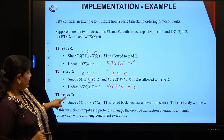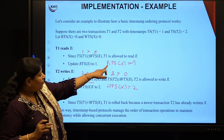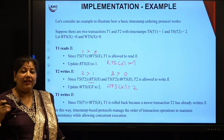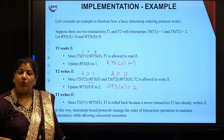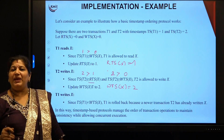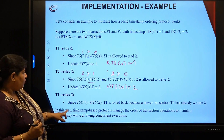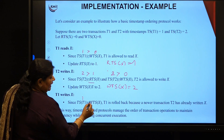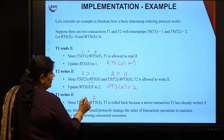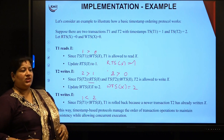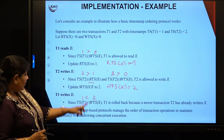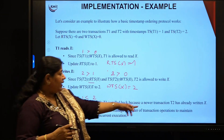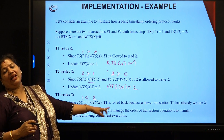Now assume T1 wants to write x. WTS(x) is now 2, which means a later transaction has already written and updated x. If T1 tries to write x, will it be in serial order? No. Since TS(T1), which is 1, is less than WTS(x), which is 2, T1 is rolled back because a newer transaction T2 has already written x. In this way, the timestamp-based protocol manages the order of operations to maintain consistency while allowing concurrent execution.